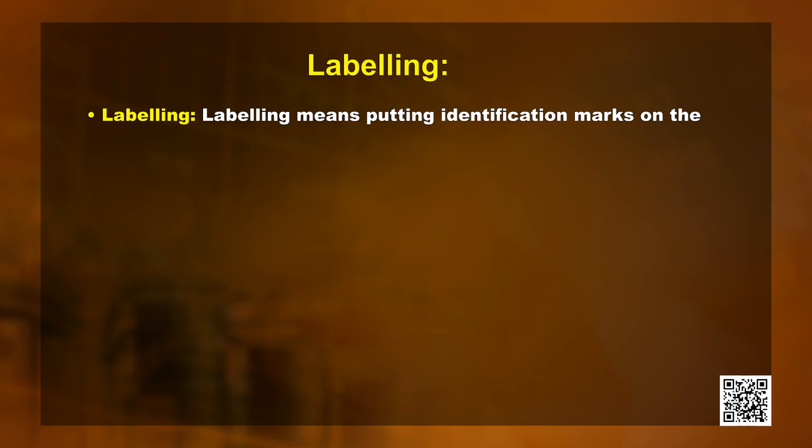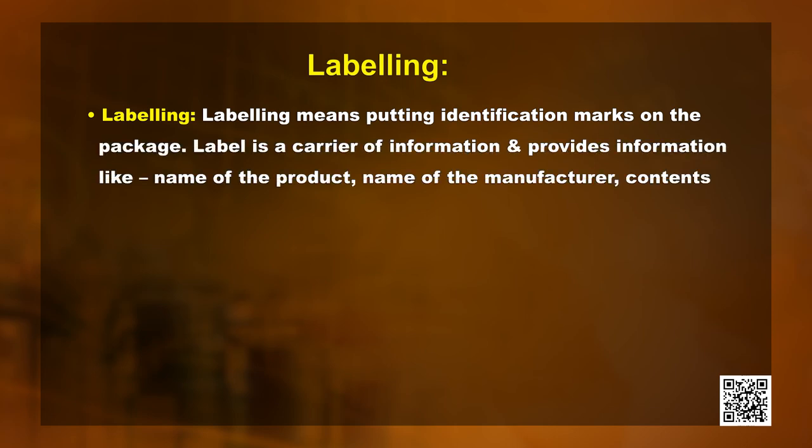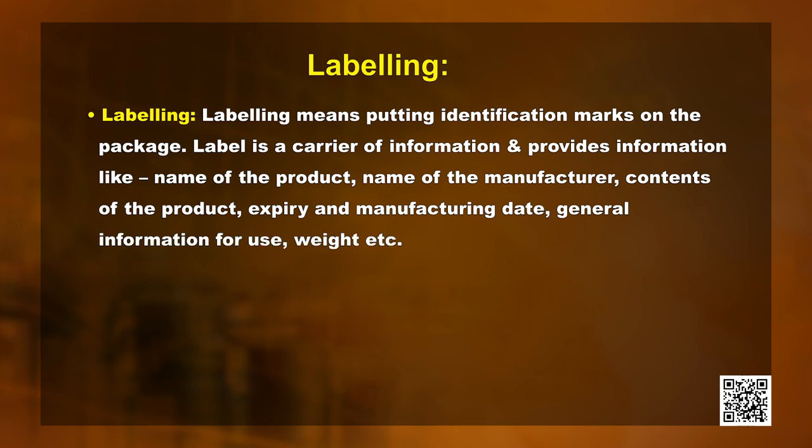The last element of product mix is labeling. Labeling means putting identification marks on the package. A label is a carrier of information and provides details like name of the product, name of the manufacturer, contents, expiry and manufacturing date, general information for use, weight, etc. Labels help identify the product — for example, we can easily identify a Cadbury chocolate from various chocolates by the purple color of its label.